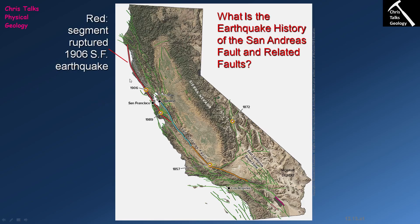Looking at the red segment, the northern portion last ruptured in 1906 — this was the San Francisco earthquake area, which was very badly damaged. It's now been over 100 years since this portion of the fault last moved. The southern portion last moved in 1989, so in comparison it's actually a lot more stable because it released stress relatively recently, making the chances of an earthquake to the south of San Francisco much lower. The prolonged period of strain buildup in the northern portion means this area is at very high risk of a substantial earthquake.